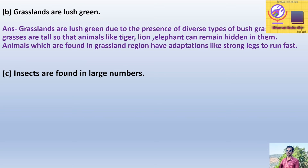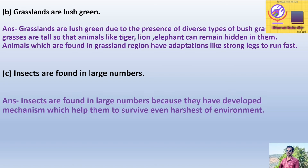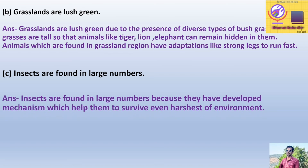Statement C: Insects are found in large numbers. Answer: Insects are found in large numbers because they have developed mechanisms which help them to survive even in the harshest of environments.